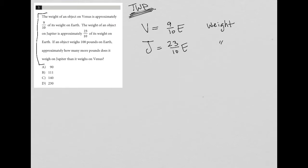If an object weighs 100 pounds on Earth, so if E equals 100, approximately how many more pounds does it weigh on Jupiter than it weighs on Venus? So basically J minus V equals what? That's the translation.